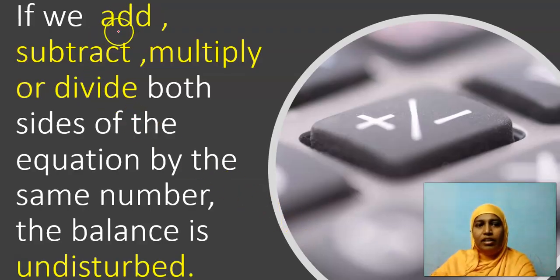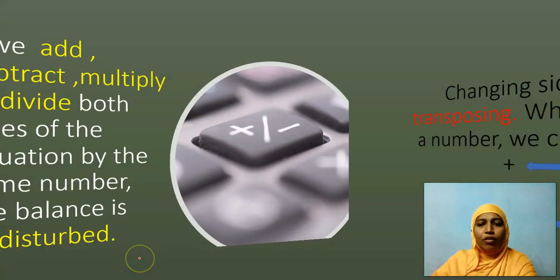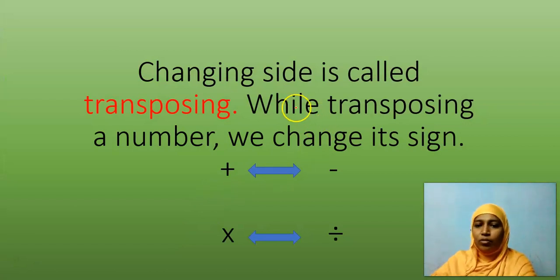So if we add, subtract, multiply or divide both sides of the equation by the same number, the balance is undisturbed. With this concept, we do have another rule which we use regularly. Changing side is called transposing. We do change sides from right side to left side, left side to right side.